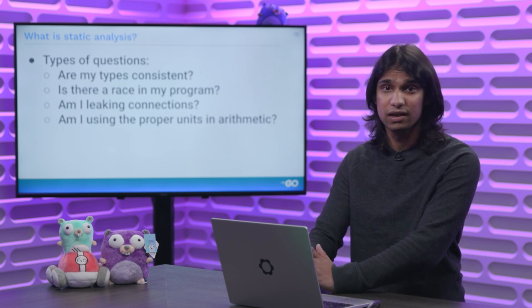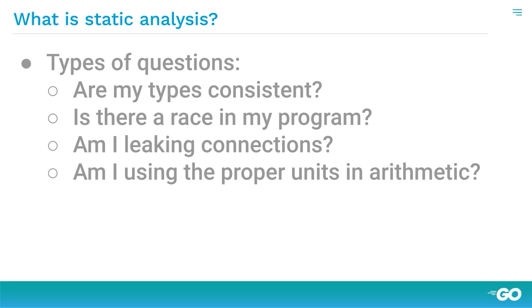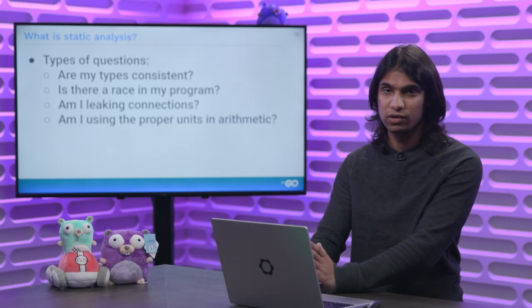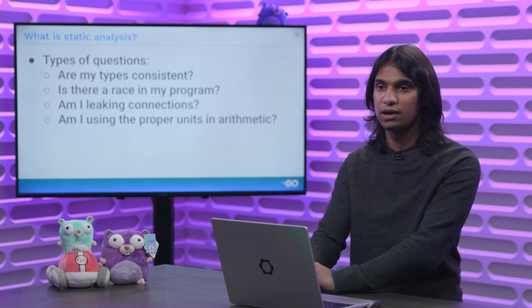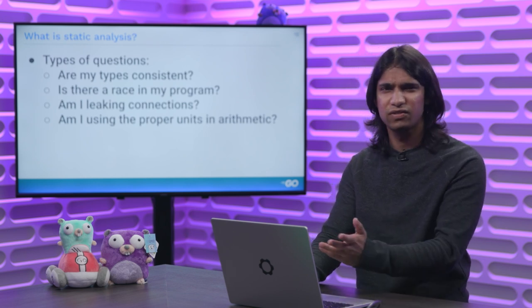Another thing you might want to ask: am I leaking connections? If you have a web server that's constantly opening and closing connections to a database or some network device, you might be creating tons of connections at runtime, and you want to make sure it's not slowly leaking more and more connections over many hours or days. Or are you using the proper units for arithmetic? Sometimes you might multiply a time.second by a time.millisecond. According to the Go type system, those are just integers without separate types. So you could introduce a static analysis tool that checks that the arithmetic you're doing doesn't really make sense.